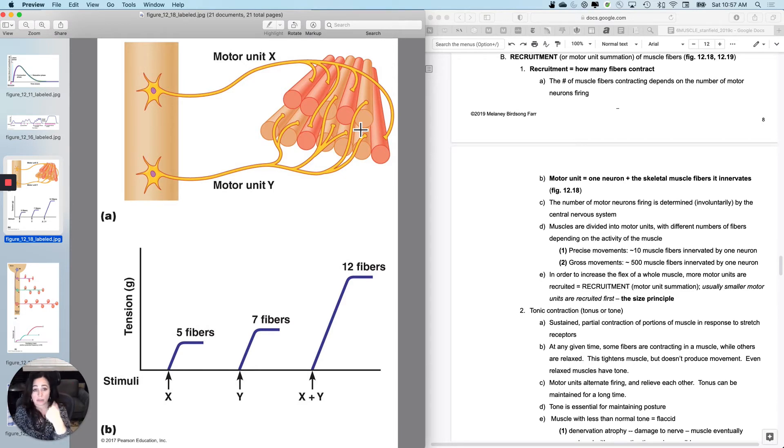Whereas with the gluteus maximus, if you are not writing any poetry and do not need to do fine motor movement, what you are going to have is one motor neuron that controls maybe 500 fibers at a time. So depending on whether you're dealing with precise or gross motor movements, that determines, evolutionarily you don't determine it, the size of the motor units.